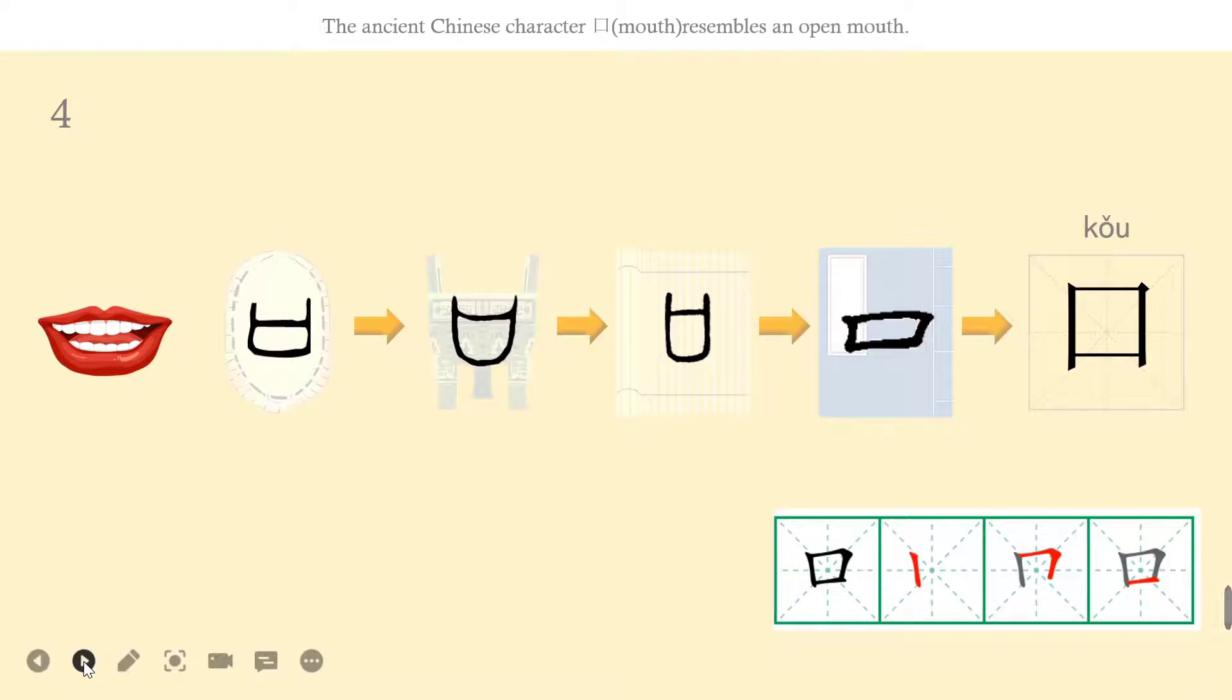Let's learn how to write. Kǒu has three strokes. The first stroke is shù. The second stroke is héngzhé. The third stroke is héng.